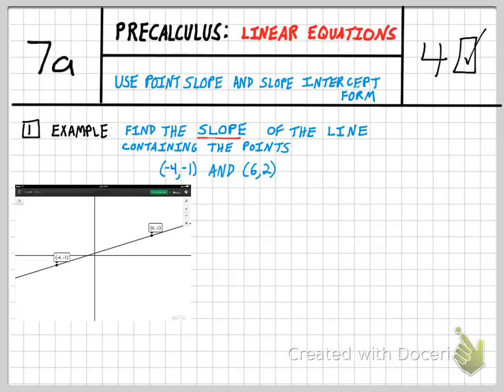Example number one: find the slope of a line containing two points, in this case (-4,-1) and (6,2). We hope that you'll remember from algebra one that the slope of a line containing any two points is the following formula: m equals y2 minus y1 all over x2 minus x1.